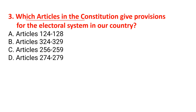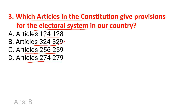Which articles in the Constitution give provisions for the electoral system in our country? Options are Article 124-128, Article 324-329, Article 256-259, Article 274-279. The correct answer is Article 324-329, meaning option B.